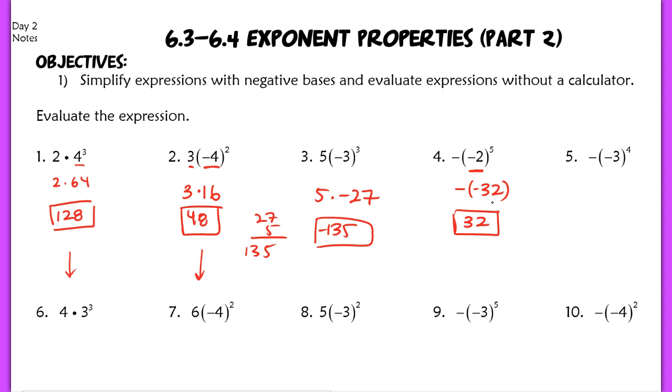In number five, (-3)⁴ is a positive 3⁴. So we have positive 3⁴ with a negative on the outside. You can simplify 3⁴, that's 81 with a negative sign out in front. So -81 is my final answer there. I'd like you to pause, try six through ten on your own, and then check with the key.